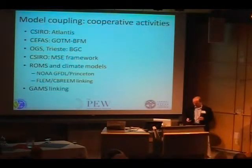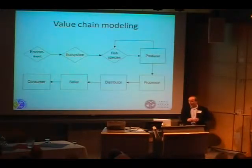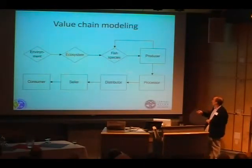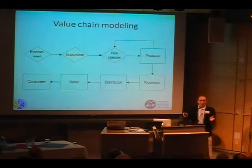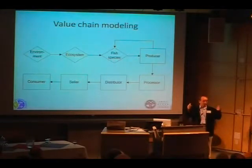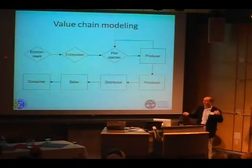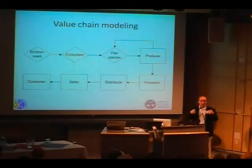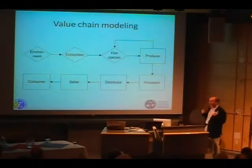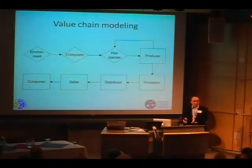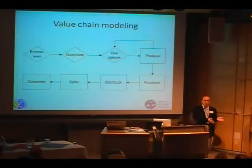Value chain modeling: the top part is what's often called end-to-end modeling. We are adding to it what happens with processing, distributing, selling, and consuming — adding an economical web on top of the food web. If we look at changes in the environment, we can use that to predict what's going to happen for the supply to the consumer. DFO calls this 'sea to plate.' At the moment I know about 10 case studies that are actually applying it — it's not paperware. It's good ecological modeling being linked to good economical modeling, and it can only be done by having experts on both sides working together.